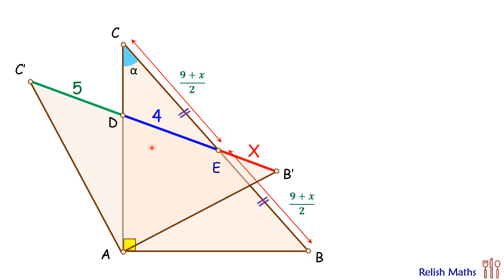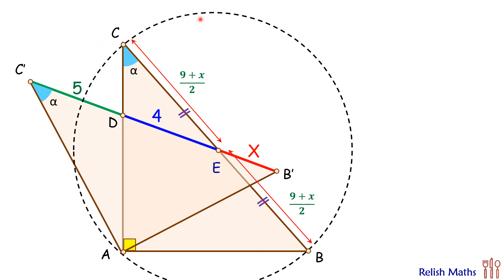We assume this angle as alpha. Because the triangles are congruent, this angle here will also be alpha degrees. Now let's draw a circle circumscribing triangle ACB. In this circle, chord CB subtends an angle of 90 degrees, and thus chord CB is nothing but the diameter of the circle.